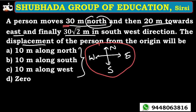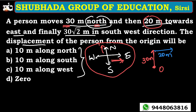First, 30 meters towards the north — you have to make a reference point O. From O, 30 meters to the north gives point A. Then 20 meters towards the east gives point B. So O to A, then A to B.